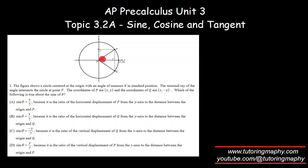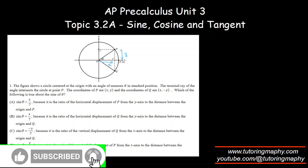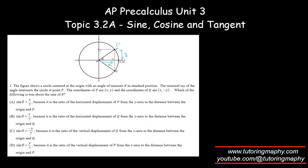It's more about the definition of sine. We know that sine is opposite over hypotenuse, so what will be the opposite? It is the height, and height is nothing but the y-coordinate. The radius is 7, so the hypotenuse is also 7. So sine theta is y over 7. The answer has to be D, because sine theta is y over 7 — it is the ratio of the vertical displacement of P from the x-axis to the distance between the origin and P.